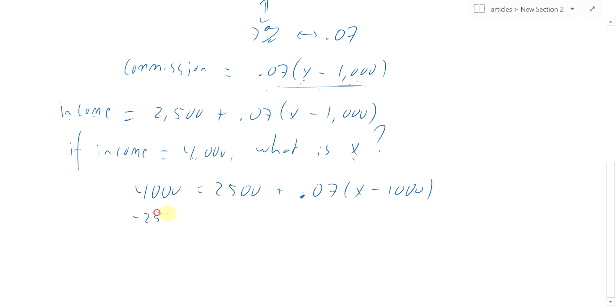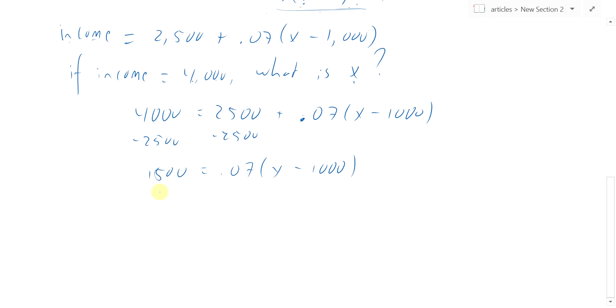Subtract the $2,500 from both sides, and that gives you $1,500 equals 0.07 times X minus $1,000. And remember that $1,500, that's how much they need to make in commission to get up to $4,000 for the month.